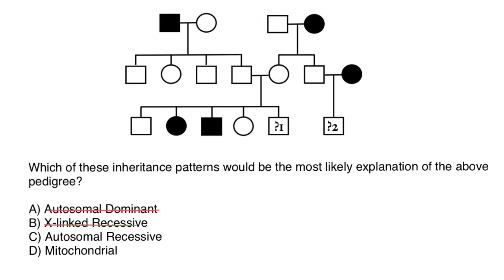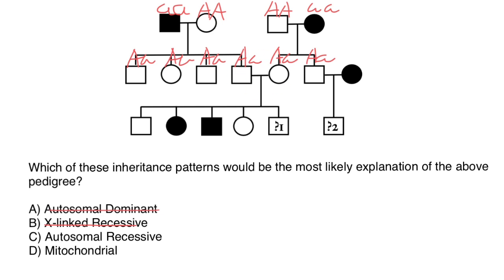Can it be autosomal recessive — variant C? This affected male should have two defective alleles. This female would have two normal alleles, so all children are heterozygous carriers with normal phenotype. This affected female also has to be homozygous recessive. This male is homozygous normal, and their progeny are also going to be heterozygous. So this couple have to be obligate carriers with normal phenotype — one parent here on top, another here on the side.